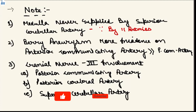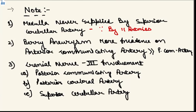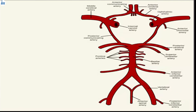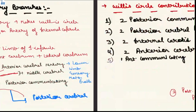An important MCQ point: the medulla oblongata has a tremendous blood supply from 11 arteries, but it is never supplied by the superior cerebellar artery, because the superior cerebellar artery runs too far away from the medulla oblongata.